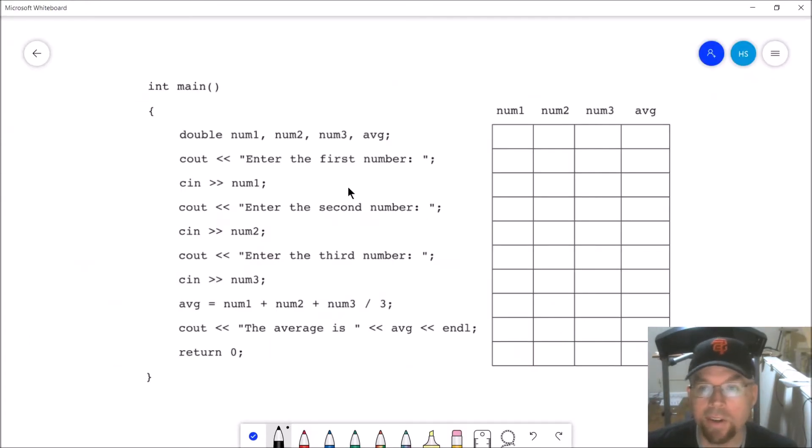Alright guys, so let's do this. On the left hand side right here I've got a simple program that is trying to find the average of three numbers. It's going to ask the user for three numbers, it's going to do the math on that and show the user what the average is.